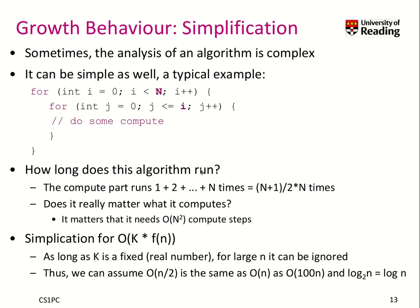We can think about how long such an algorithm runs: it runs 1 time, 2 times, up to n times — actually n times, since the inner loop goes from 0 to less than i. Accumulating this gives n(n+1)/2. We simplify this to O(n²) in terms of complexity, so it doesn't matter that the inner loop only goes to i — we could treat it as going up to n in our analysis.